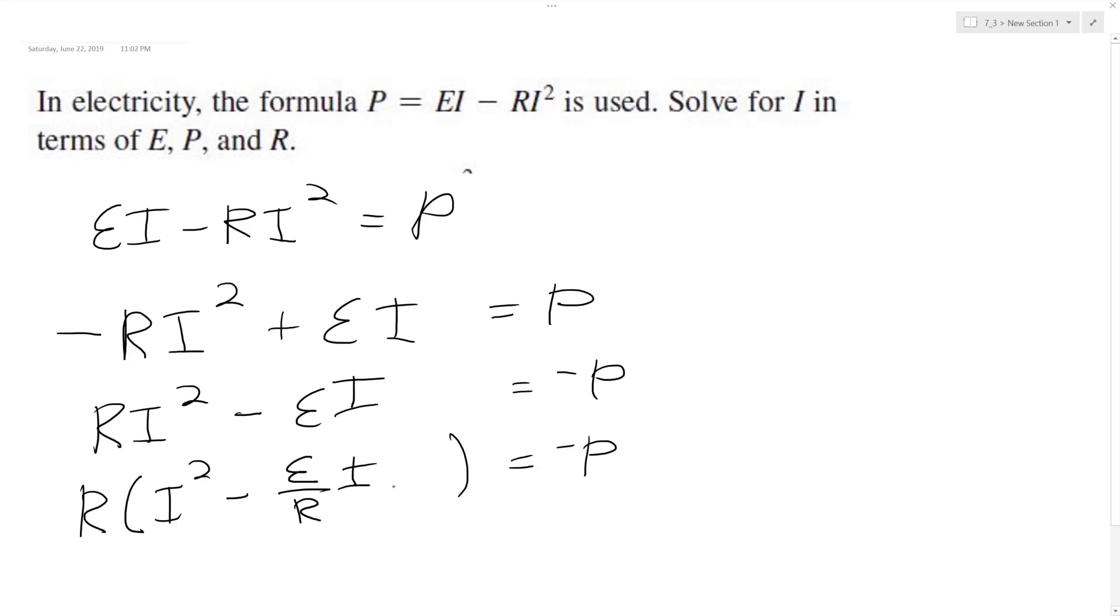So I get, divide 3 by 2. These are my constants here, so half of ER is going to be E over 2R. So this becomes plus E squared over 4R squared.